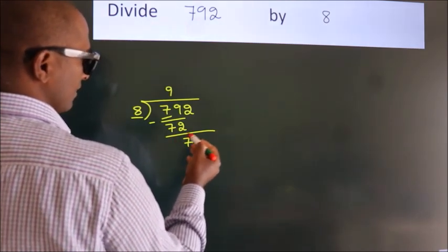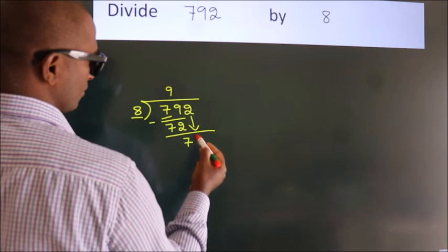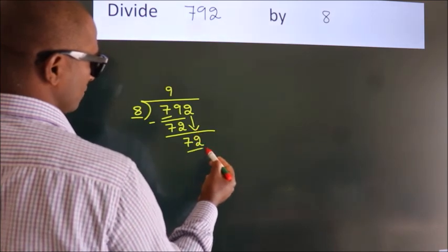After this, bring down the beside number. 2 down. So, 72.